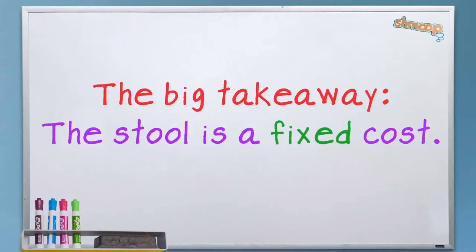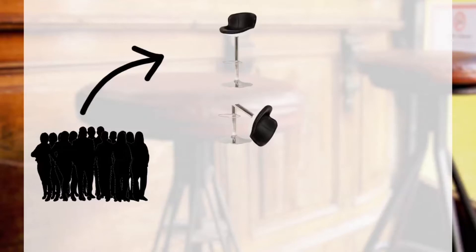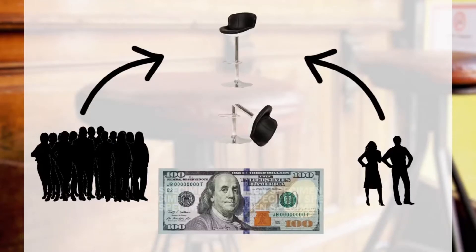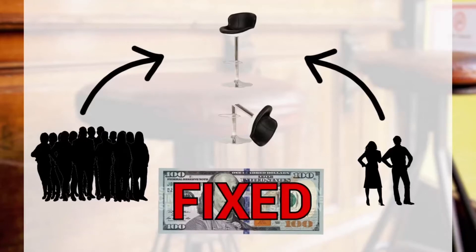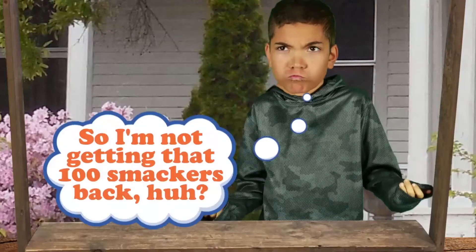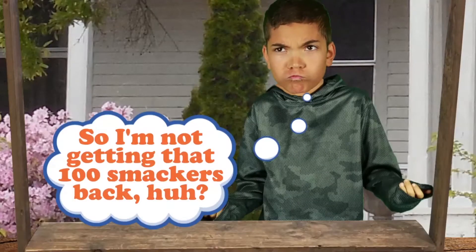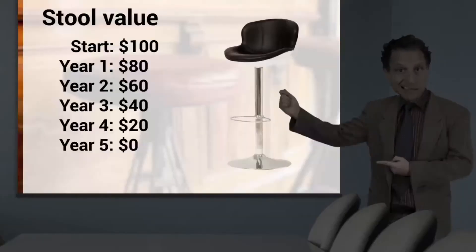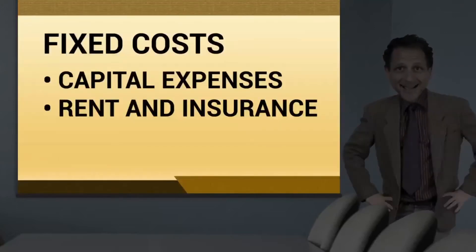The big takeaway here, however, is that the stool cost is fixed. If a ton of people use it, assuming no breakage, or only a few people use it, that $100 you spent to buy it was fixed or set. No variability. So all the stuff we were talking about above was fixed. And remember, fixed things are things like capital expenses, like the stool, which has kind of a set depreciation schedule, and things like rent and insurance,